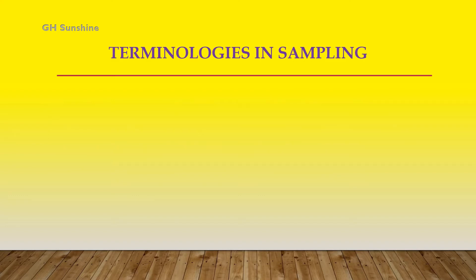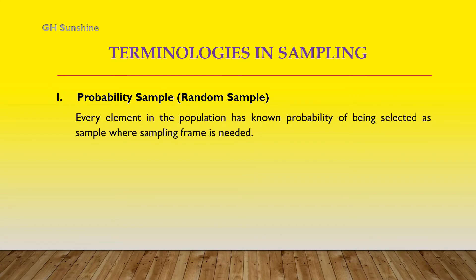There are two terminologies in sampling. First, probability sample, known as random sample. Every element in the population has a known probability to be selected as a sample. This random sample requires a sampling frame.